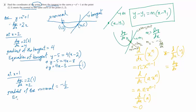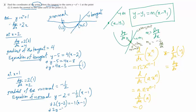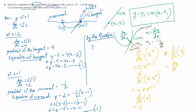Now we find the equation of the normal line, which follows the same form as any other line. y minus y₁, which is 2, equals m, which is minus one half, times (x minus x₁, which is 1). Cross-multiplying: 2(y minus 2) equals minus 1(x minus 1). Simplifying, we get 2y minus 4 equals minus x plus 1, which gives us 2y equals minus x plus 5. This is equation 2.